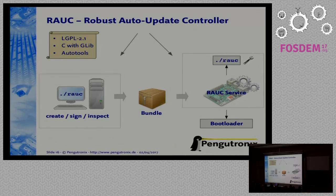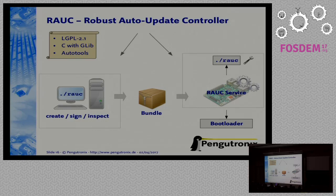Here's a short overview of RAUC. It's licensed under LGPL 2.1, so it should be easy to use in your application or product. It's C code built on glib and packaged with autotools, so it should build easily. RAUC can be compiled as a host tool, used to create, sign, re-sign, and inspect updates for your device — updates in RAUC are called bundles. You can also compile it for the target, where it operates as an update service that controls the entire update process, installation, and communication with the bootloader. It also provides a small command line tool that allows you to easily install a bundle from the command line or inspect the system or updates.